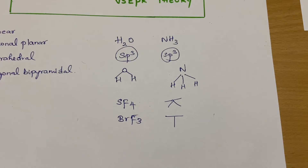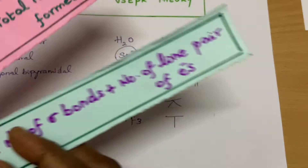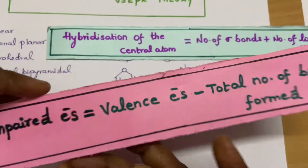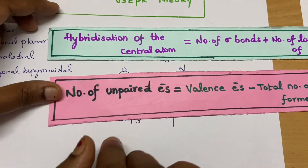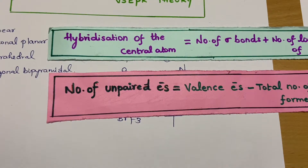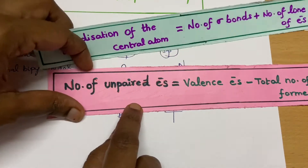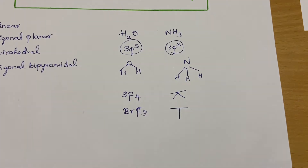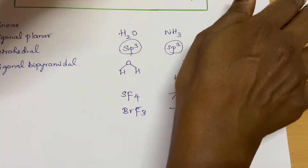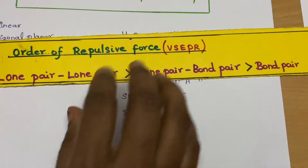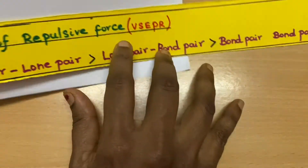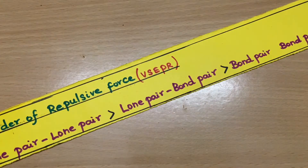Before going into this, I would request you to watch my previous video which is about finding the lone pair of electrons and the hybridization. Please watch it quickly and come back to this video. I will give the link in the description box. Before that, we have to get introduced to the VSEPR theory to find the geometry or the shape of the molecule.